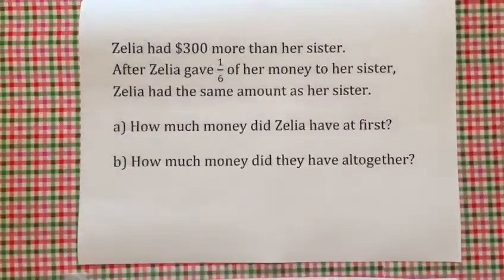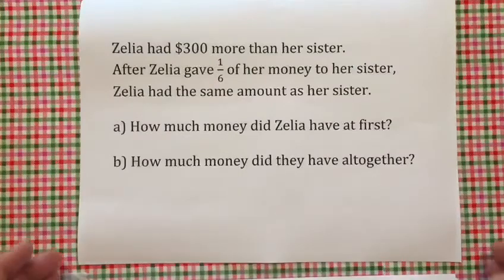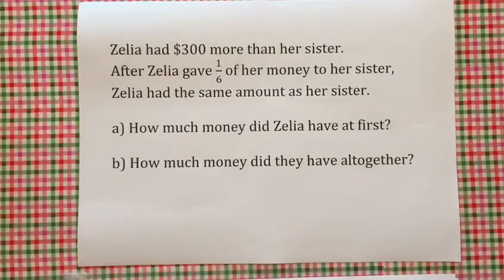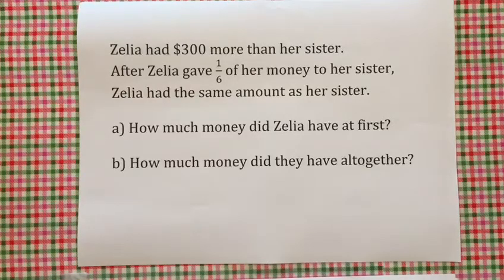Now, let's look at this question. Zelia had $300 more than her sister. After Zelia gave one-sixth of her money to her sister, Zelia had the same amount as her sister. How much money did Zelia have at first, and how much money did they have altogether?